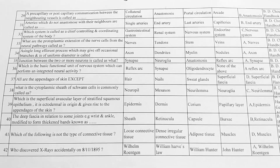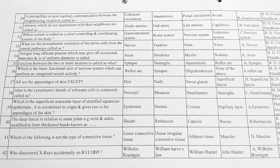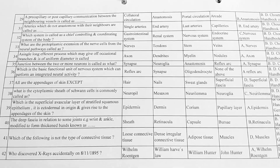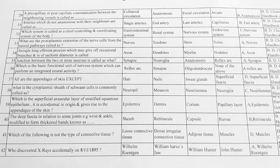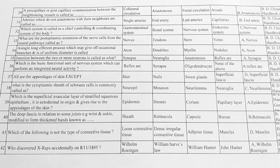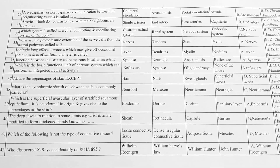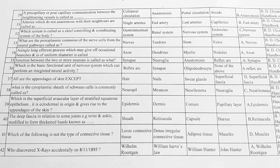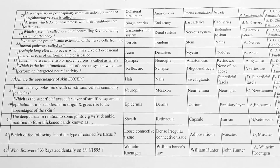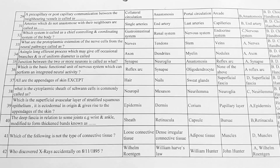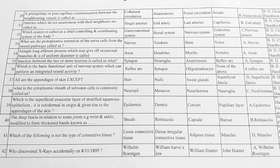Next, which of the following is not a type of connective tissue? Options: A. loose connective tissue, B. dense irregular connective tissue, C. adipose tissue, D. muscles. Answer D is correct, muscles.